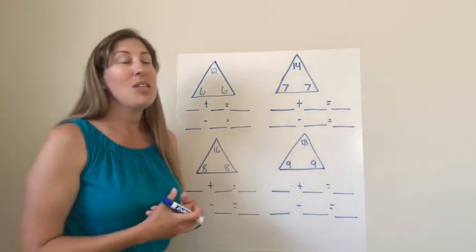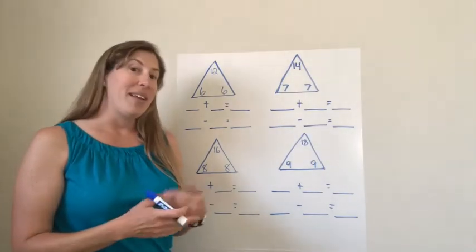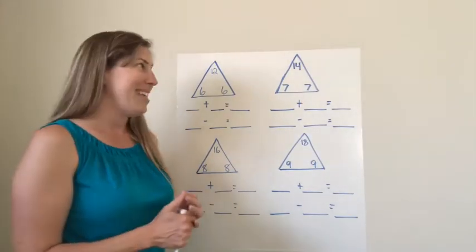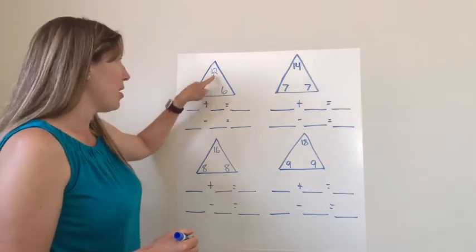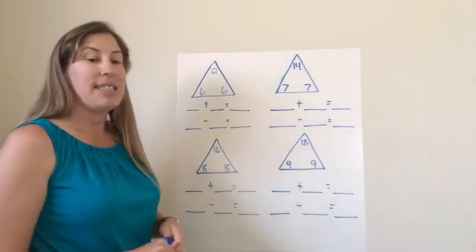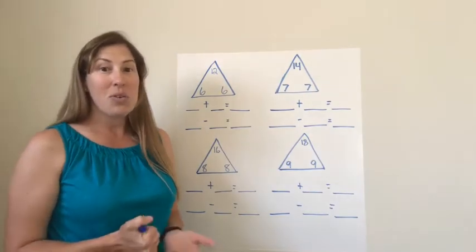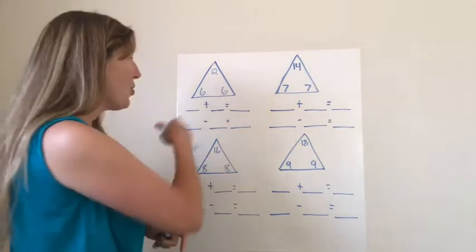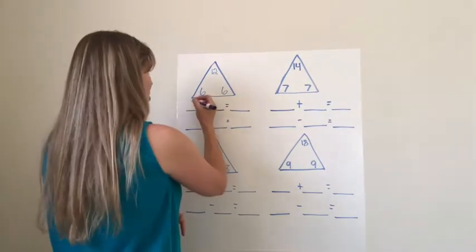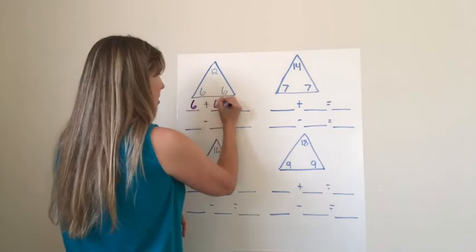So I'm going to use this method to elaborate a little bit more on what today's lesson is. So as you can see in this first triangle I have the three numbers. I have a twelve, a six, and a six. Now those numbers are all related and I'm going to use my math fact, my doubles math fact that I know to create my addition sentence. So if I know that six plus six is twelve,